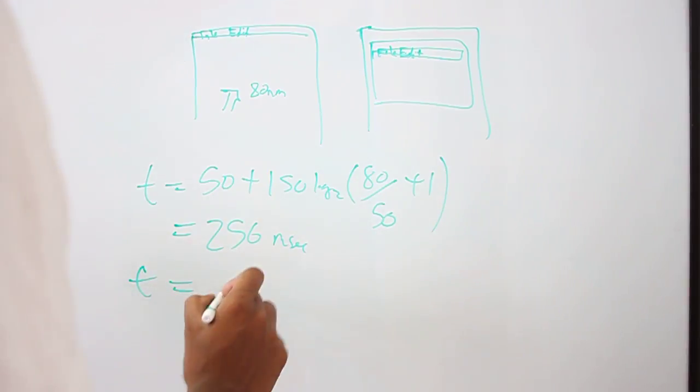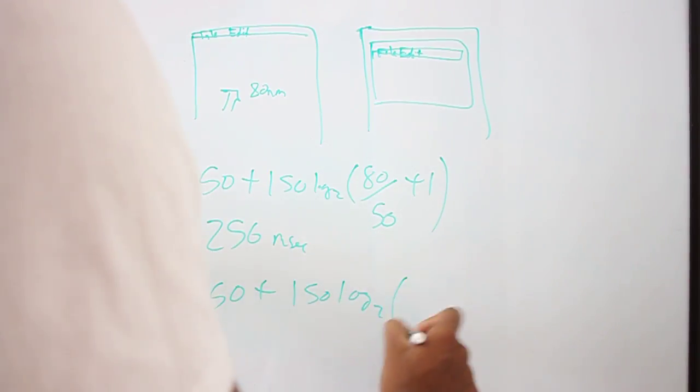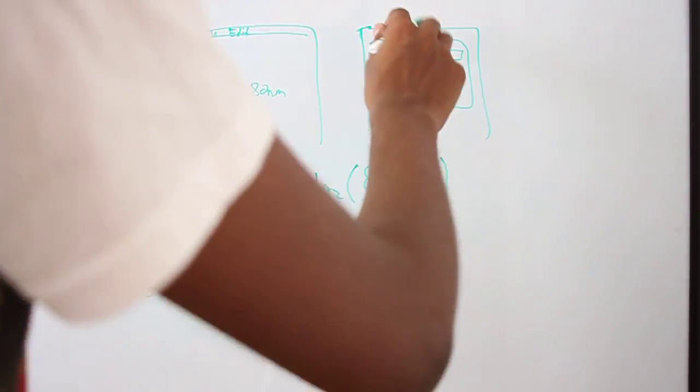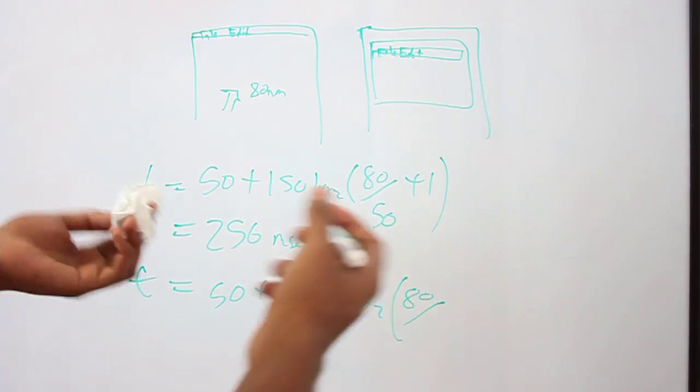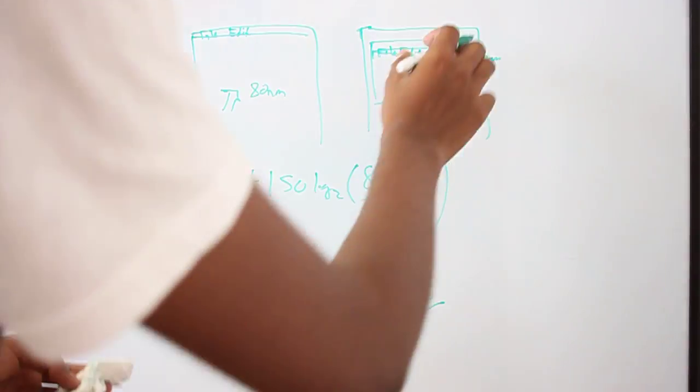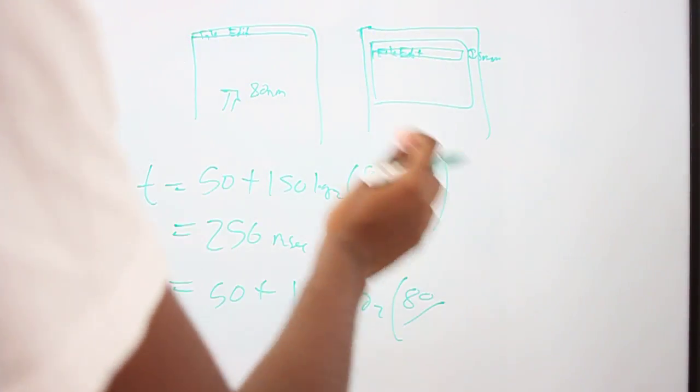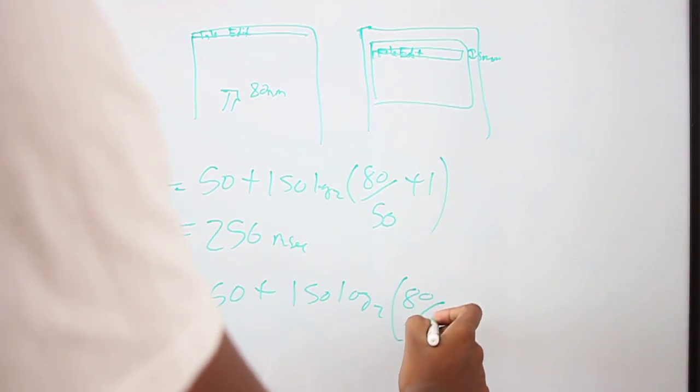If you do the same thing on the Windows computer, it's 50 plus 150 log base 2, the same distance. But in the Windows computer, the size of the target is actually defined. It's probably 5 millimeters. And it's defined because it's not at the corner of the screen, it's in the middle of the screen. So it has a fixed size that you can actually calculate.